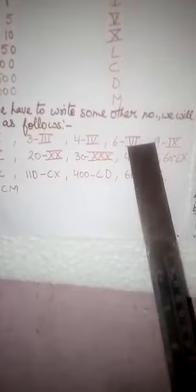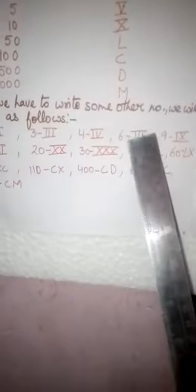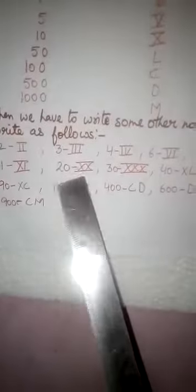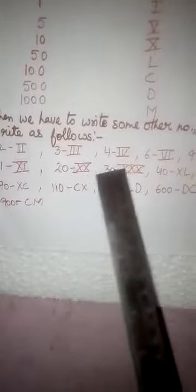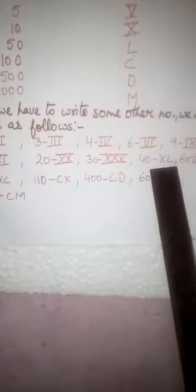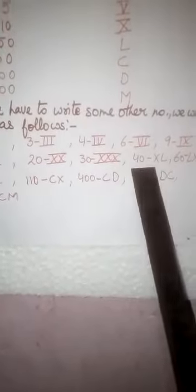6, we write as 5 plus 1. 9, 10 minus 1. 11, 10 plus 1 will be 11. 20 we write as 2 Xs. 30, 3 Xs and 40 as 50 minus 10 is 40. 60 is 50 plus 10 and so on.